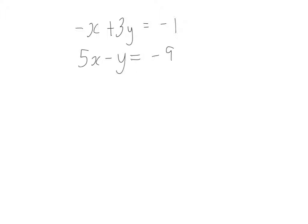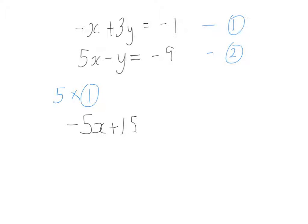Here we're asked to solve a pair of simultaneous equations algebraically. Calling them equation one and equation two — we can't just add one and two directly because the coefficients of both variables don't match. This time, instead of eliminating y's, we can eliminate the x's. I've got 5x and minus x. To eliminate these, I need minus 5x, so I multiply equation one by 5. That gives: minus 5x plus 15y equals minus 5. I'll call that equation three.